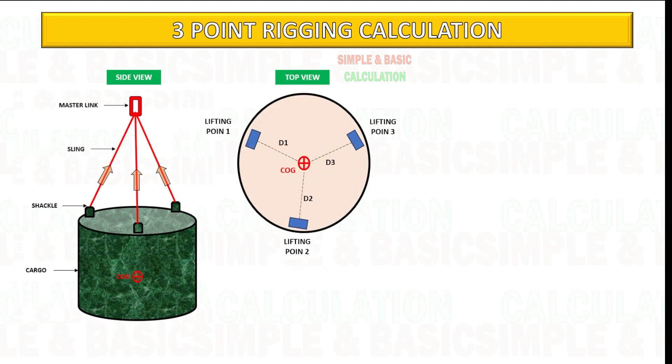Example: Calculate the tension on the sling based on the given below values. Weight of the cargo is 24 ton and wire sling length we will use is 6 meters. We also consider the weight of the cargo is equally distributed in each lifting point.